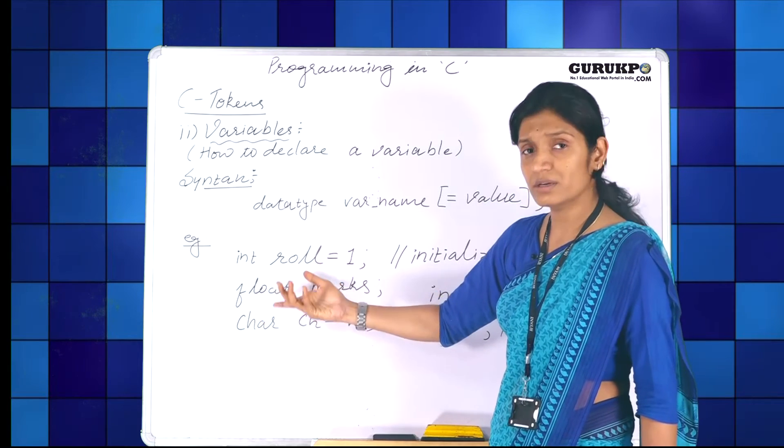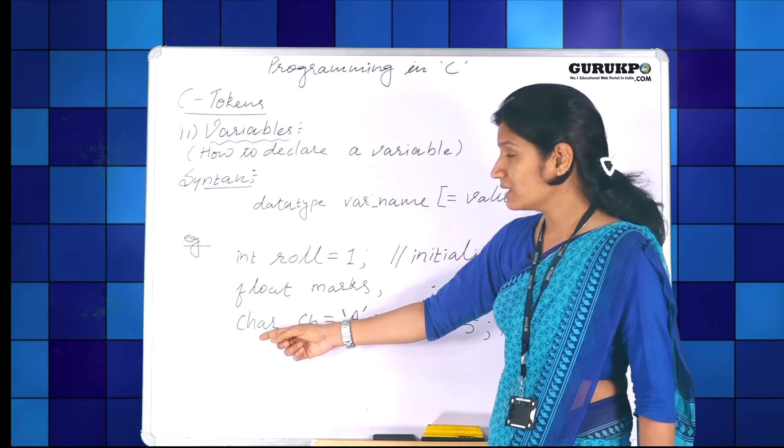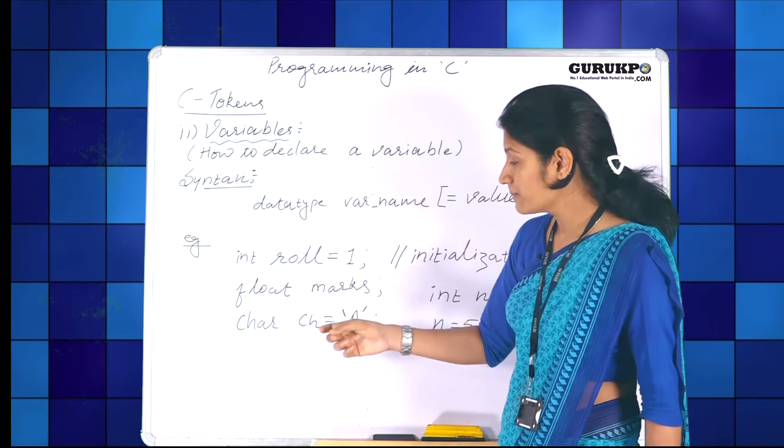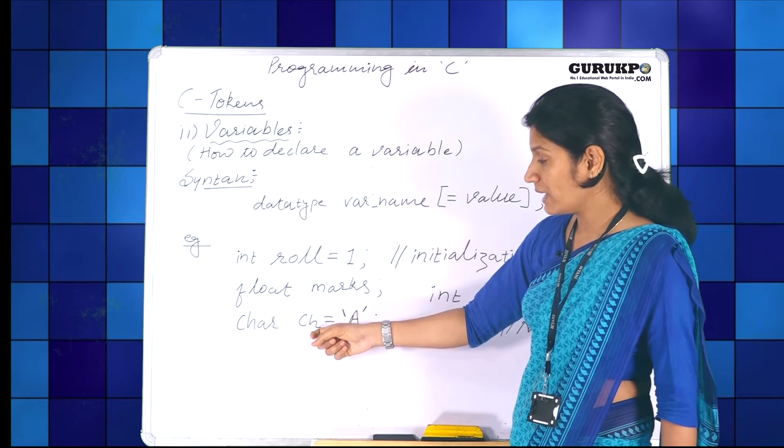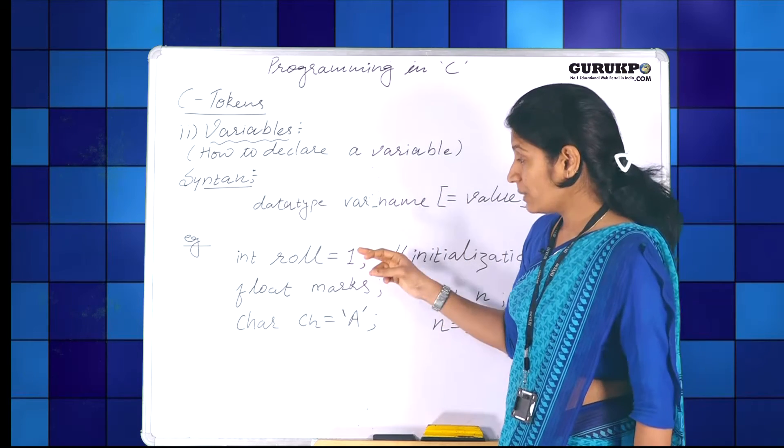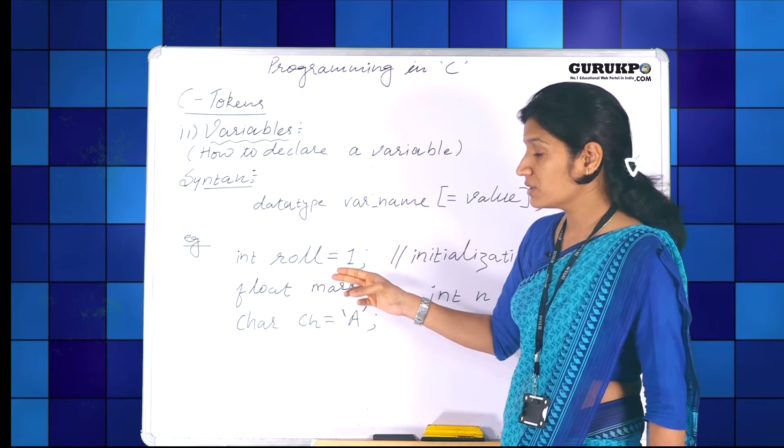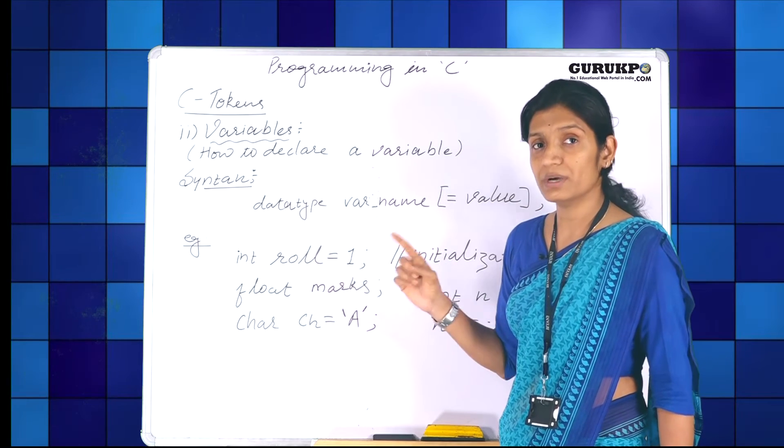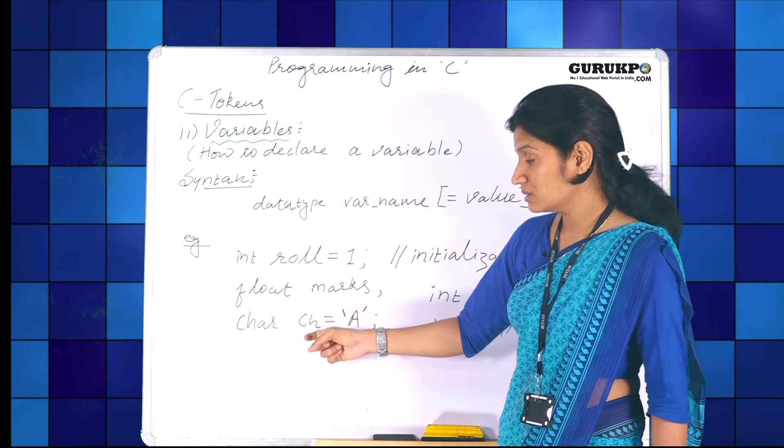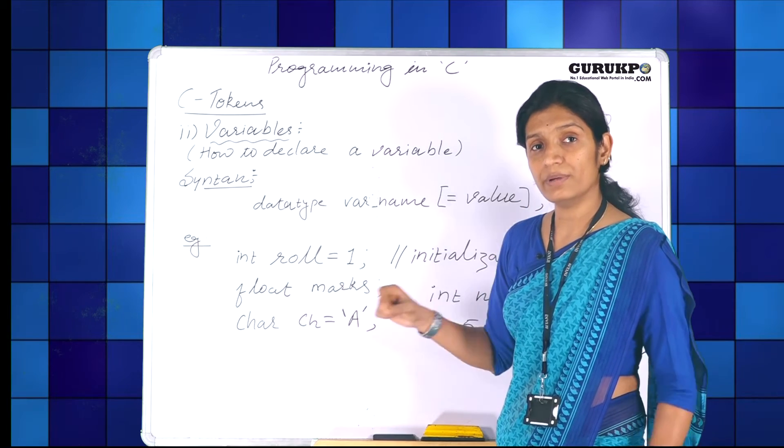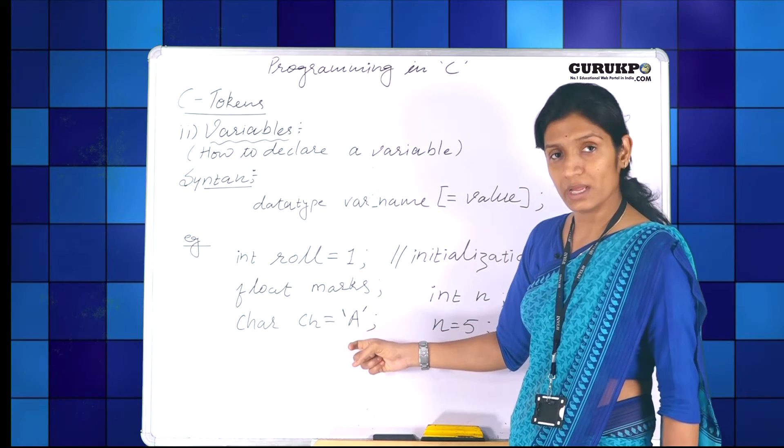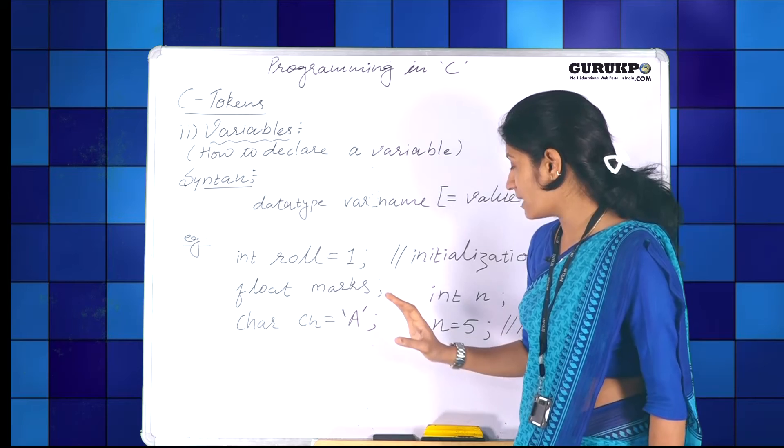Now the third example, I have taken character. Character is for storing single character. I have taken the name as ch equal to a. The values that will be assigned to integer float will be without quotations, but the values that I am assigning or initializing to a character variable will be in single quotes. As you can see, I have put single quotes around a. So these are the basic examples.